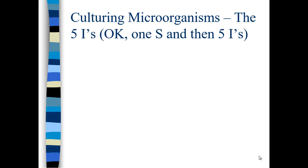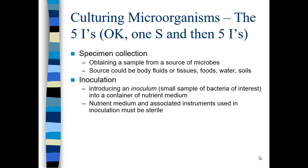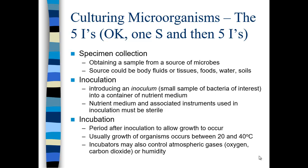When we culture microorganisms, we have the five I's, but first we have specimen collection. We obtain a sample from a source of microbes — it could be body fluids, tissues, food, water, soil, or a pure culture obtained from somebody else. Then we take that specimen and inoculate it into a container of nutrient medium. We must make sure that our medium prior to inoculation is sterile. After we inoculate, we incubate, keeping it at the appropriate environmental conditions.